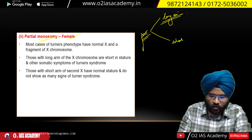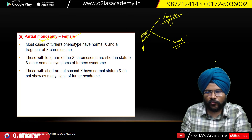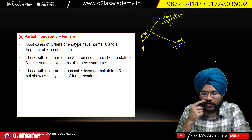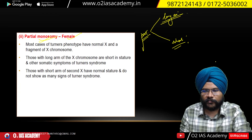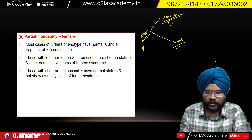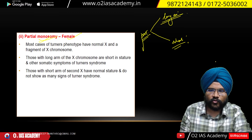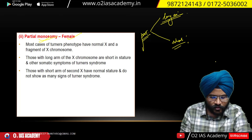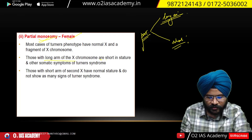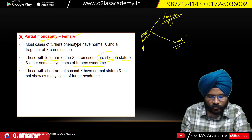The X chromosome has a short arm and a long arm. Those with the long arm of the X chromosome are short in stature and show other somatic symptoms of Turner syndrome.